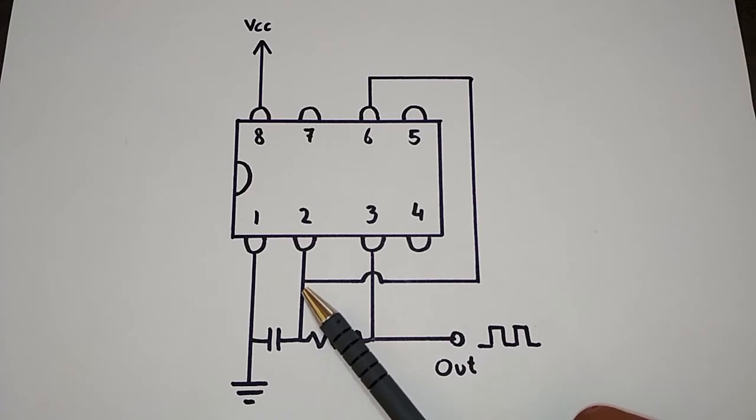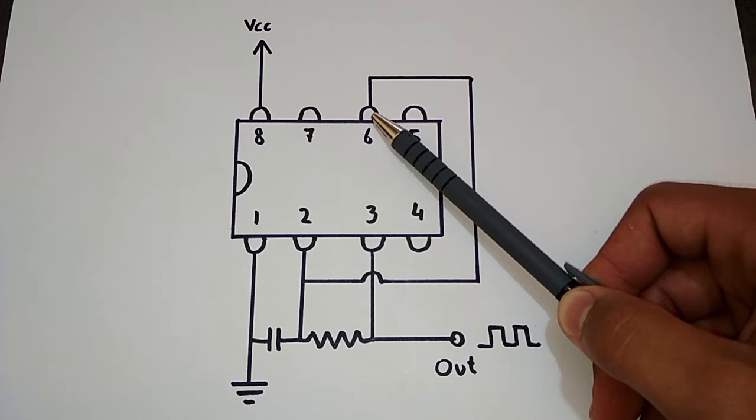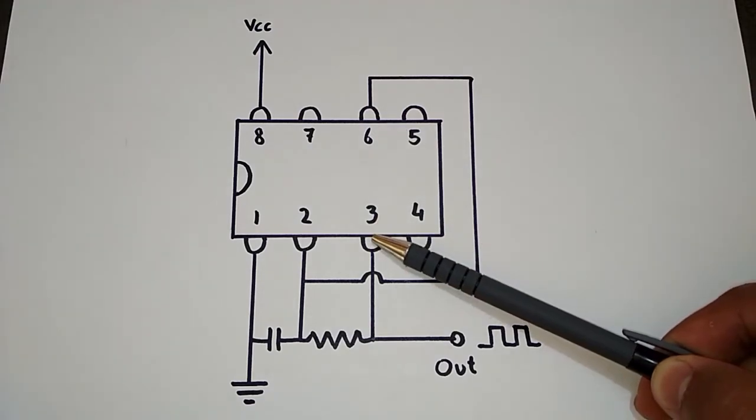This will go on until pin 6, threshold, is at ⅓ Vcc. At this point, pin 3, the output will be brought low, and the capacitor can start discharging through the resistor.